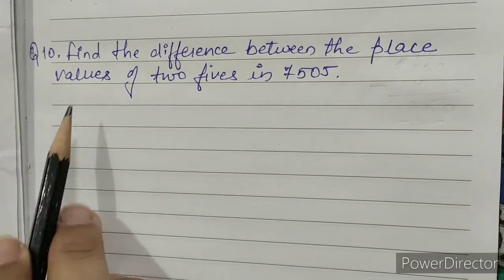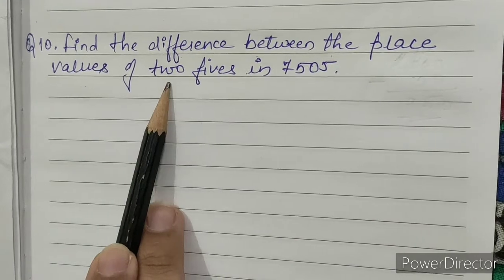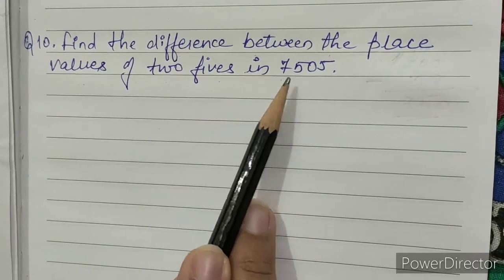Question number 10: Find the difference between the place values of two fives in 7505.